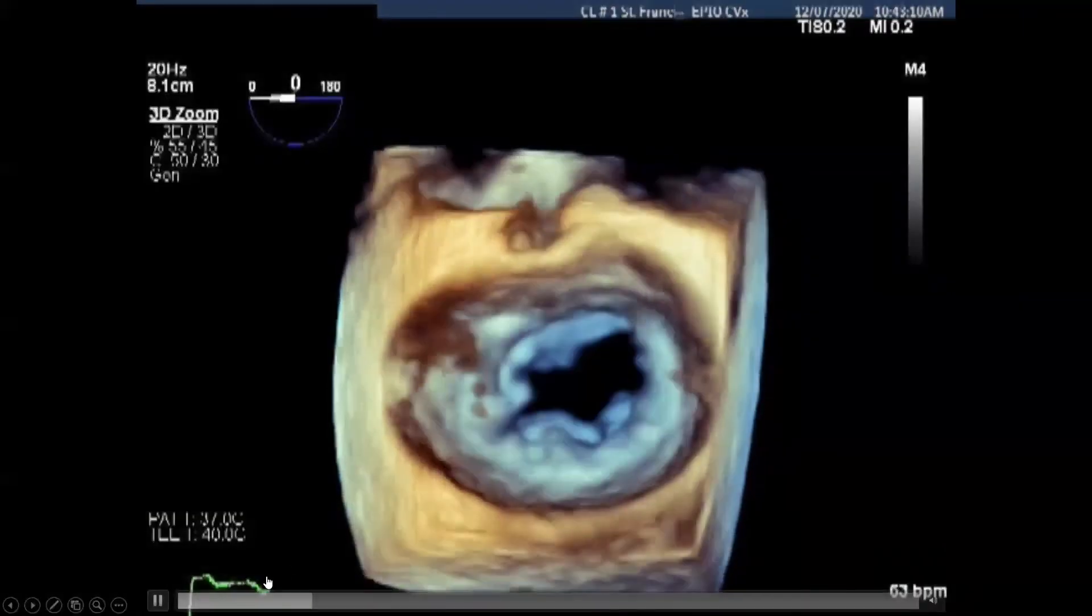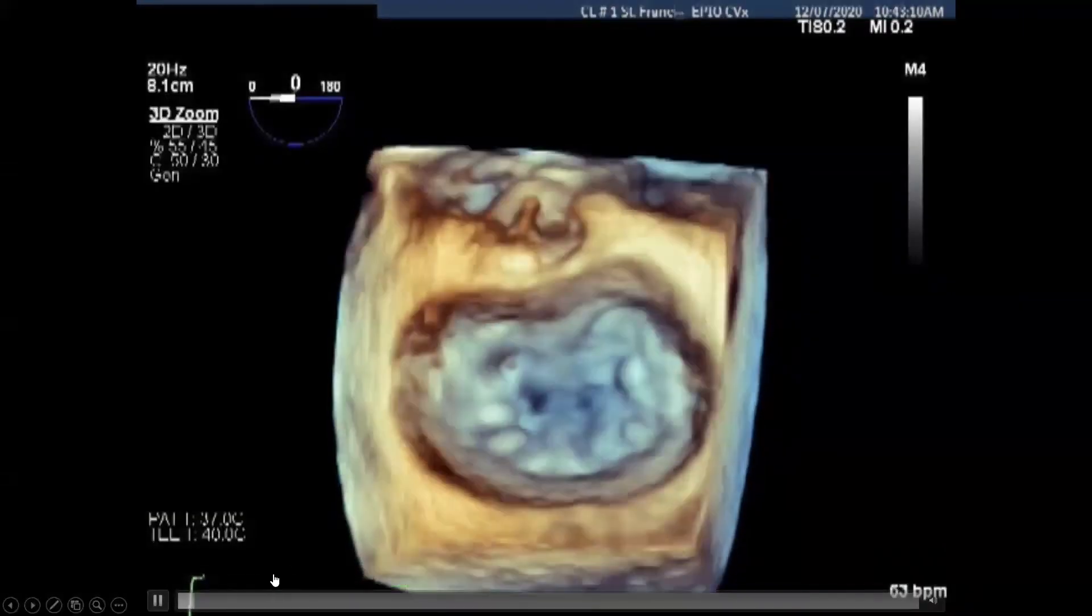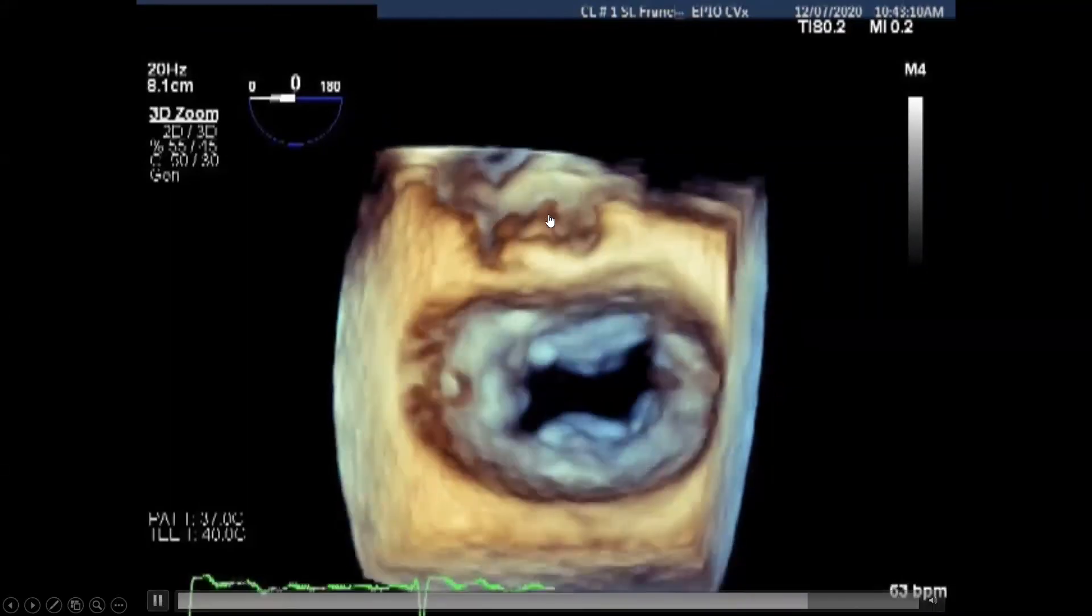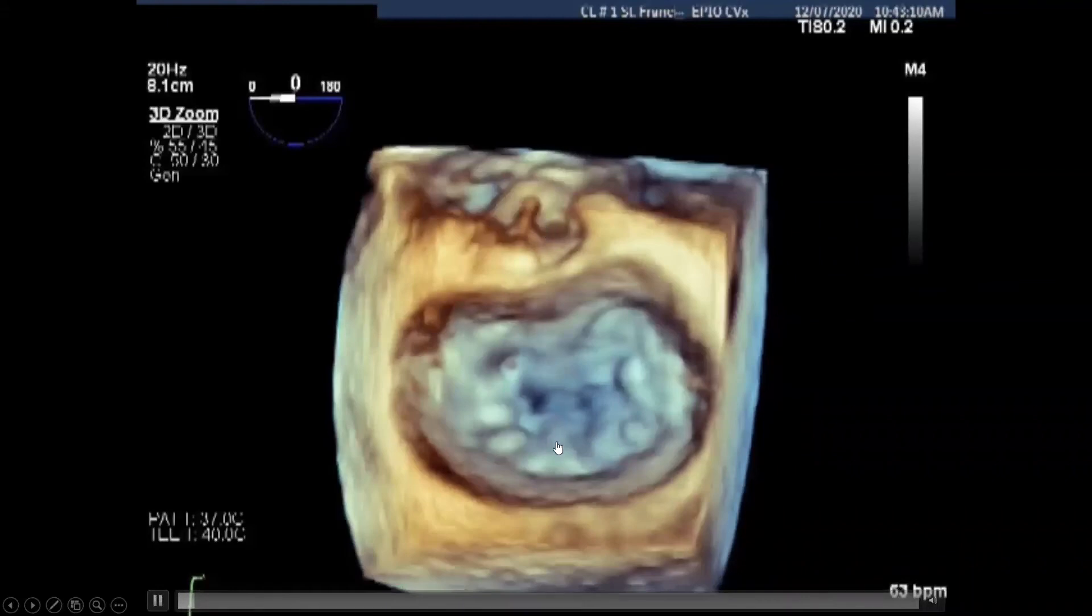Here we have a live 3D view of the mitral valve. As we can see here, we have the aortic valve on top, and this is our surgeon's view. Over here we have the lateral-most aspect of the annulus. And here we have our left atrial appendage, followed by A1P1, A2P2, A3P3.